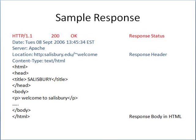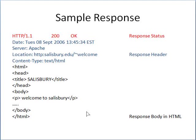Here's a sample HTTP response. In red is the response status, which includes the HTTP version number, the response code, and the reason phrase. For this particular example, the code is 200 and that code means OK. In blue is the response header which includes the date, the server, and the information about the website. Finally, in black is the HTML code for the website. That's used by the browser to display the site.